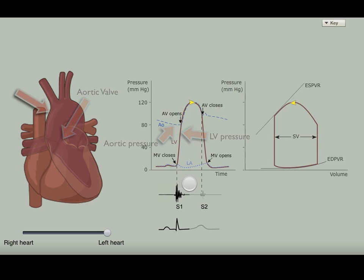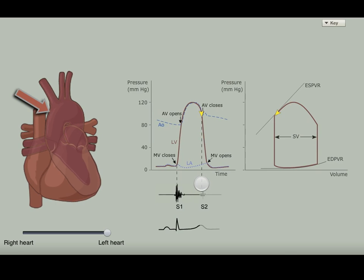You can see how the aorta expands slightly as it receives blood and recoils slightly when the aortic valve is closed to keep blood flowing to the body. This action in the diagram is fairly subtle.